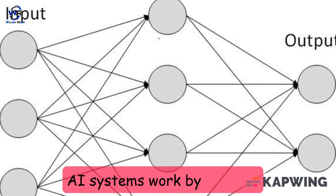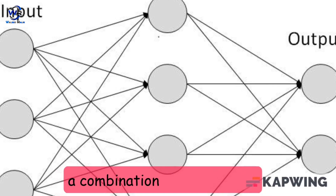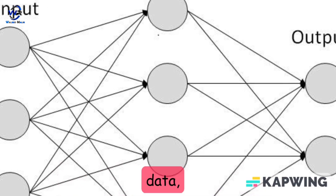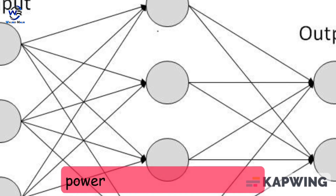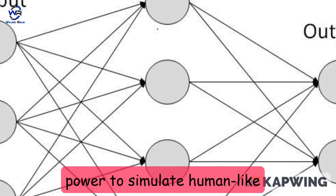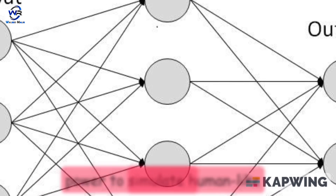AI systems work by utilizing a combination of algorithms, data, and computer processing power to simulate human-like behavior.